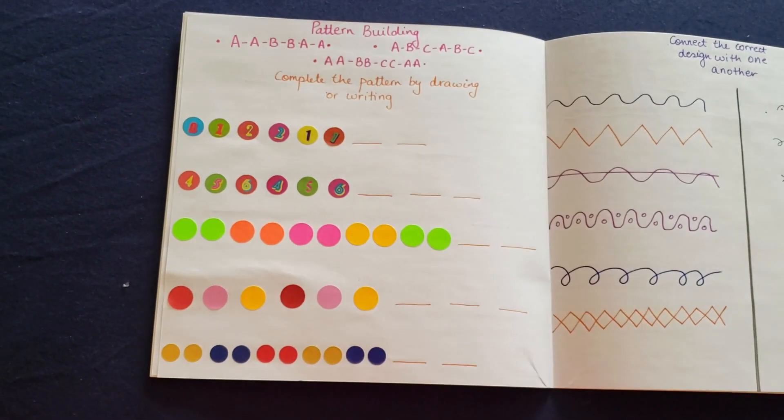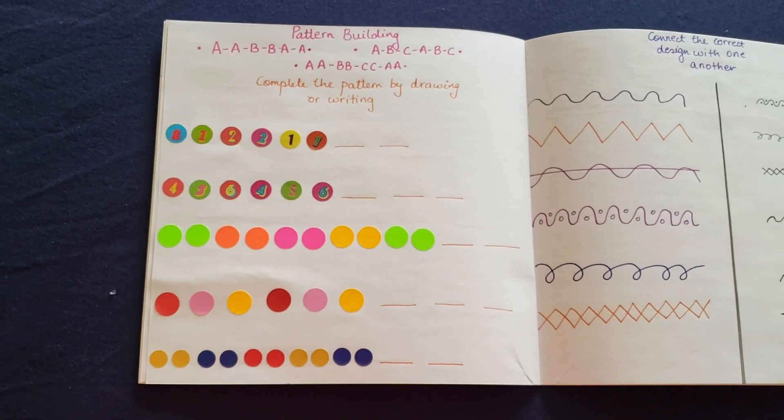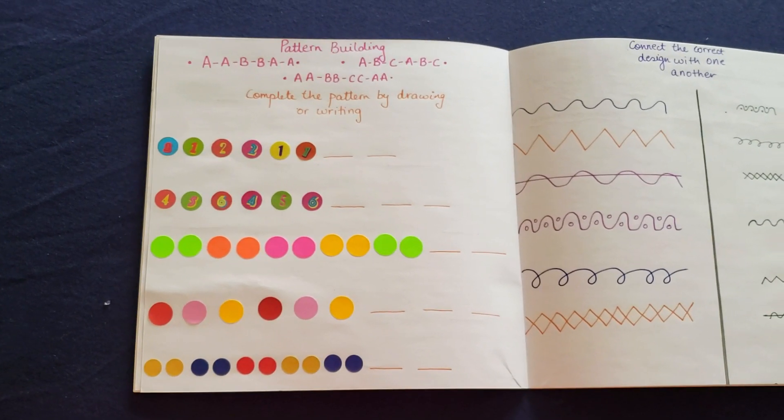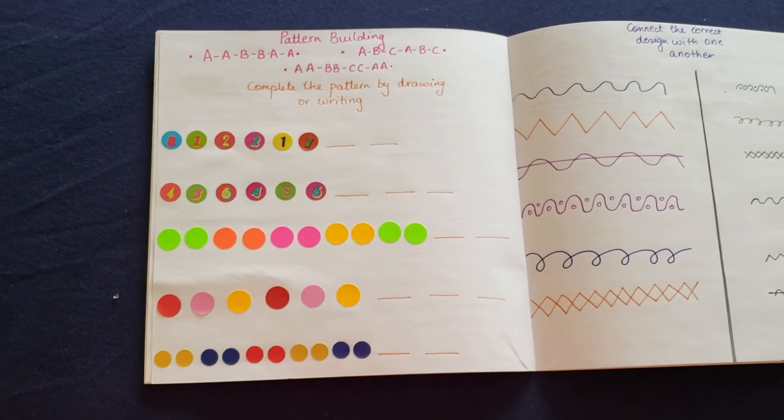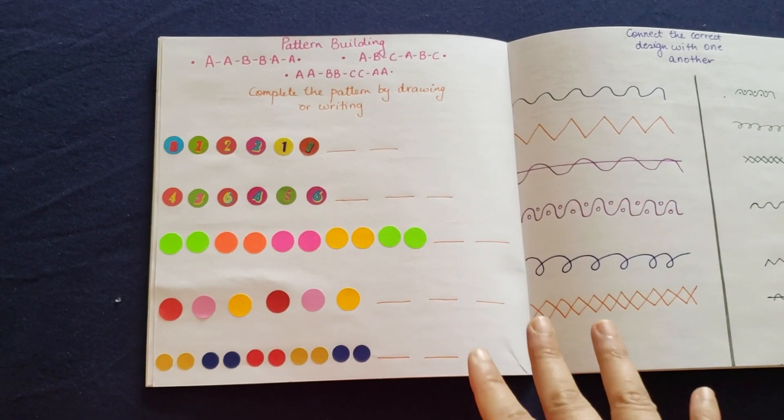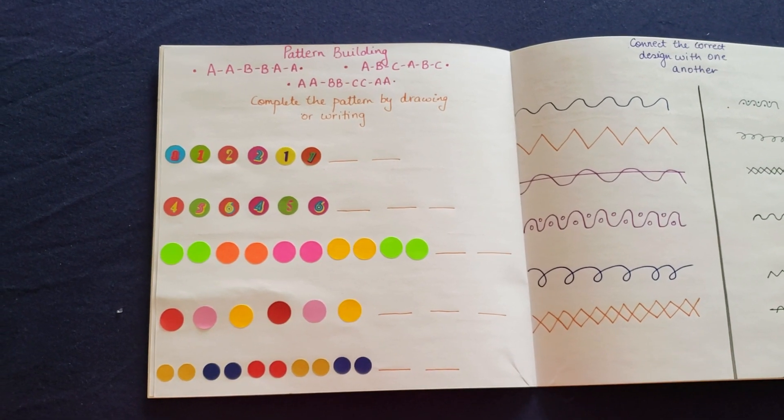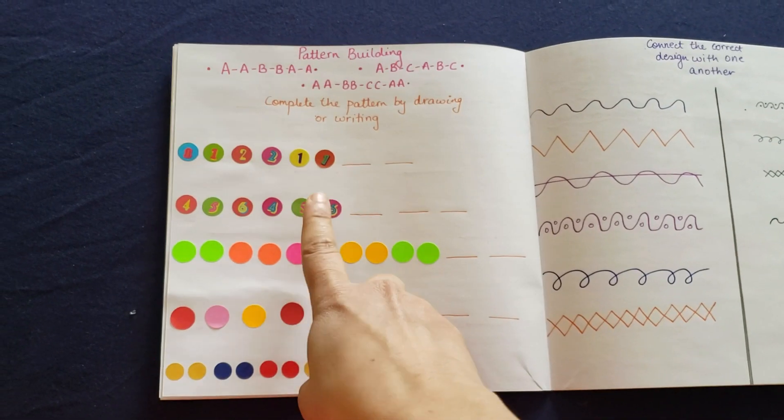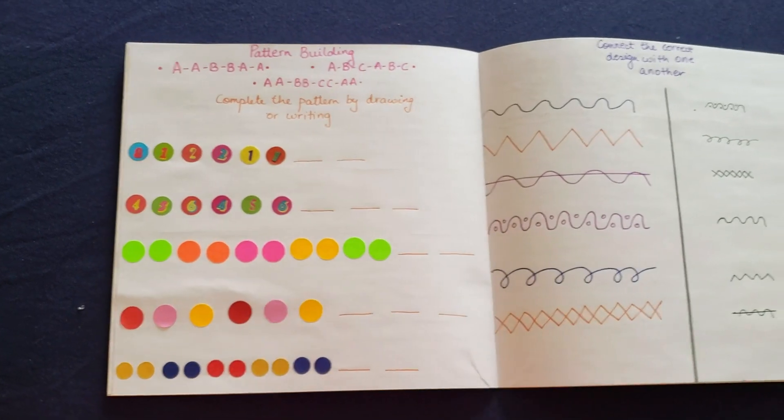Okay, a pattern building. She really enjoyed the pattern building which I made for her last time. So I just went a step forward and added a little more complication here, which is A-A-B-B-C-C-A-A, A-A-B-B-A-A, A-B-C-A-B-C again. So there are five options here and then there are the dashes that she needs to complete by either drawing or by writing. When I say writing is in the number and drawing or coloring is by using the same kind of color and then finishing the code.